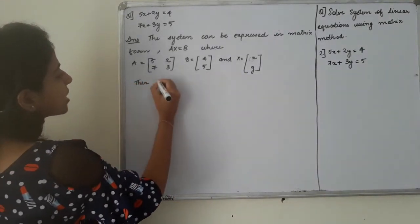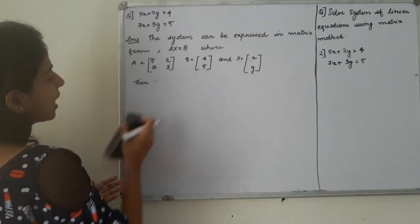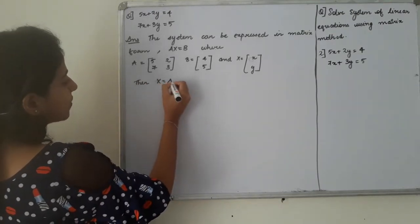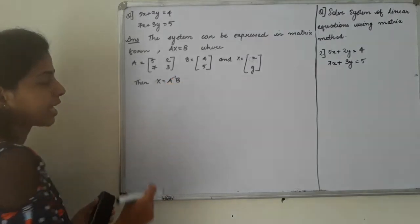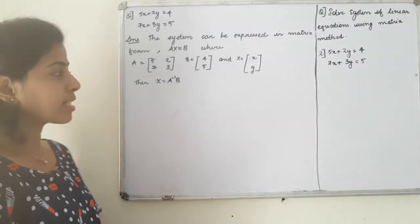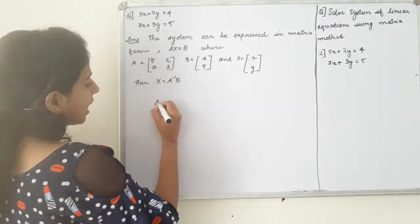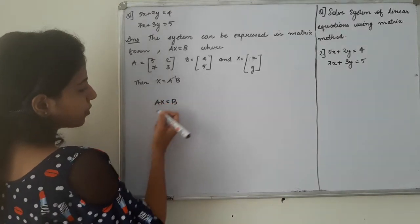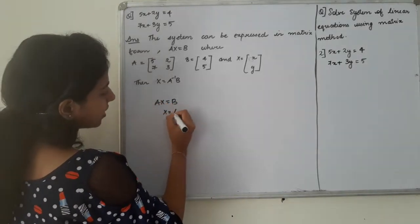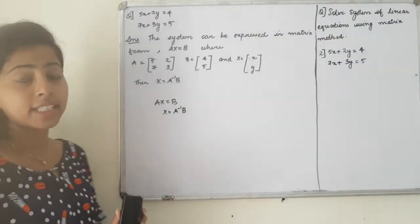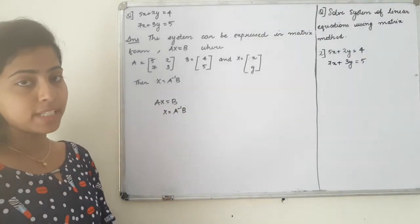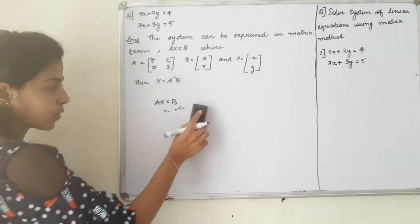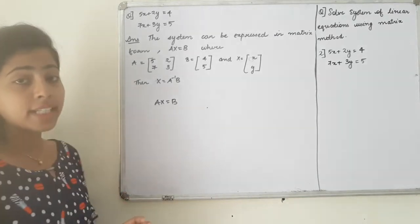Then X inverse would be A inverse of B. Which X would be AX from X. Now X would be AX is equal to B. We have almost seen X is equal to B.